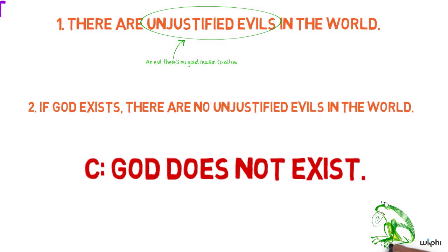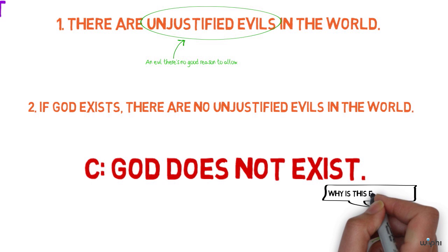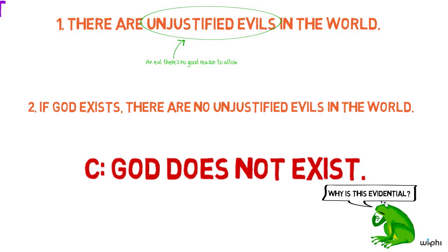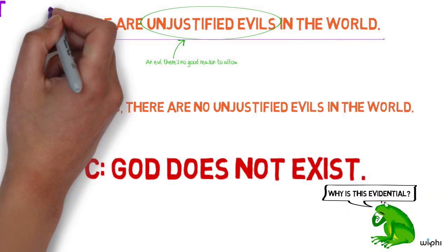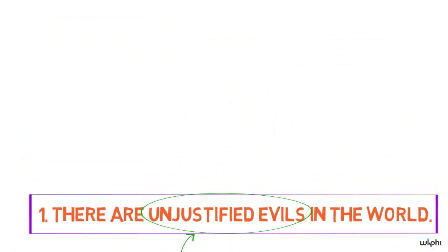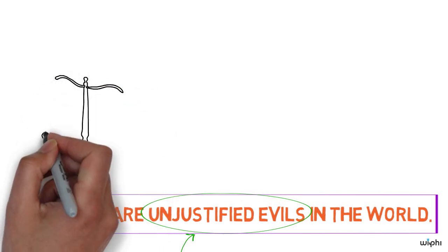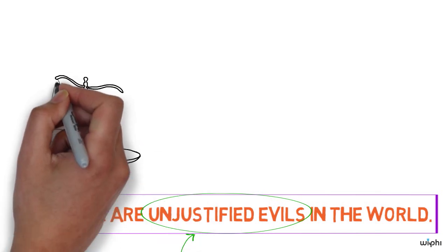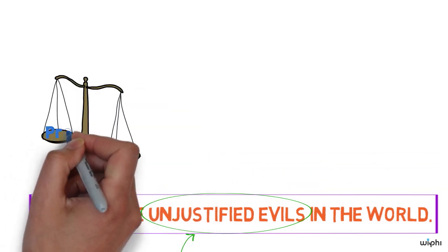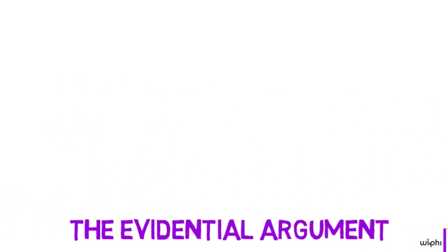Now notice the way I set up the argument. It's actually a valid deductive argument. So why would we call this an evidential argument? The answer is the first premise, there are unjustified evils, can only be supported with an evidential case. We cannot argue that beyond a shadow of a doubt there are unjustified evils. We have to weigh the evidence, pro and con, for the claim that there are unjustified evils.